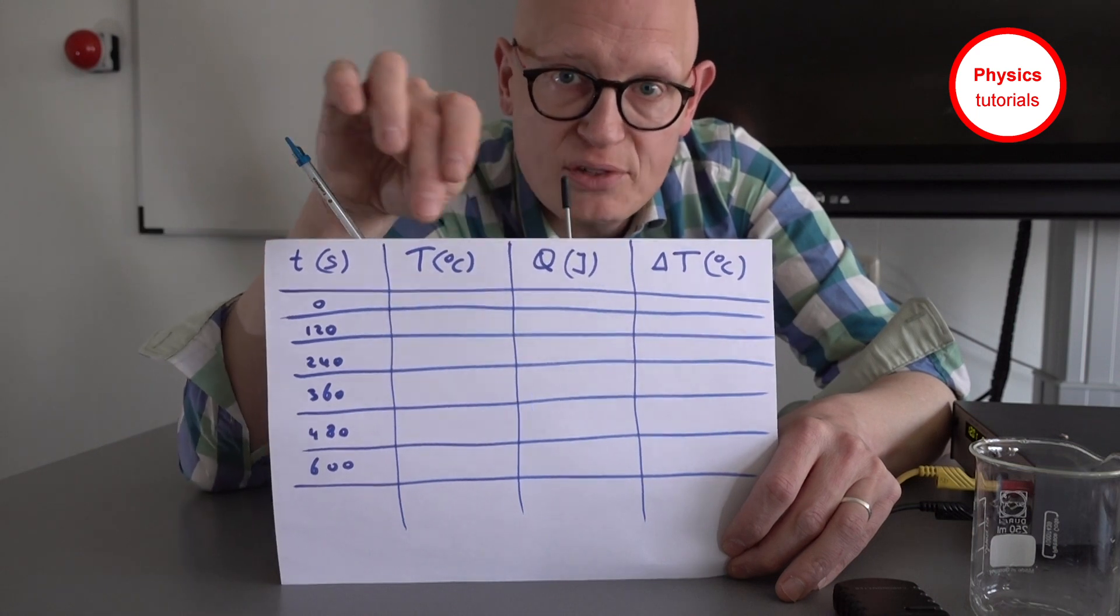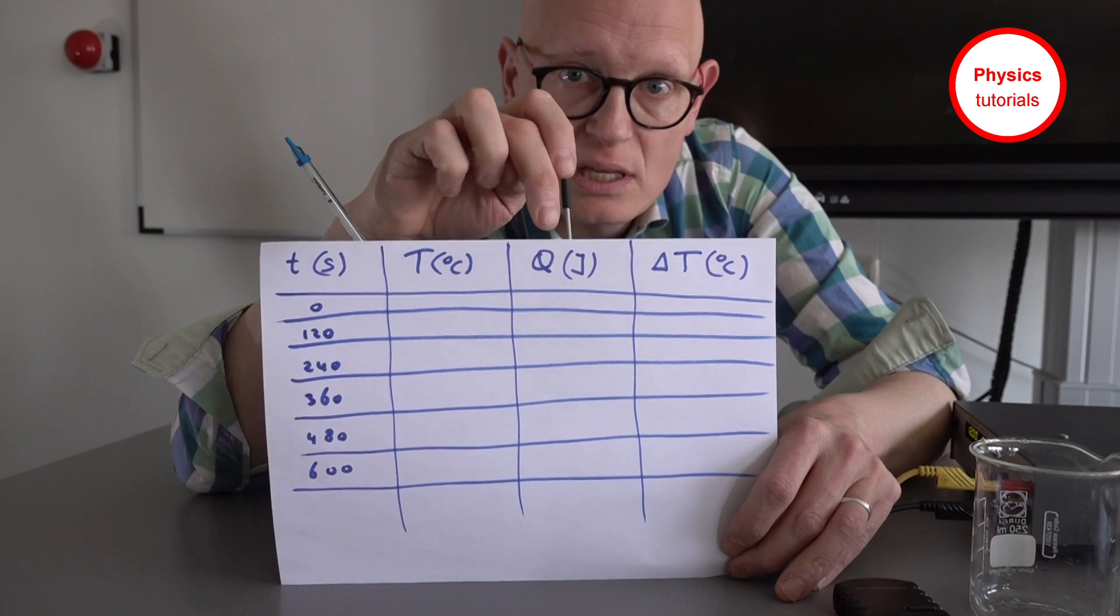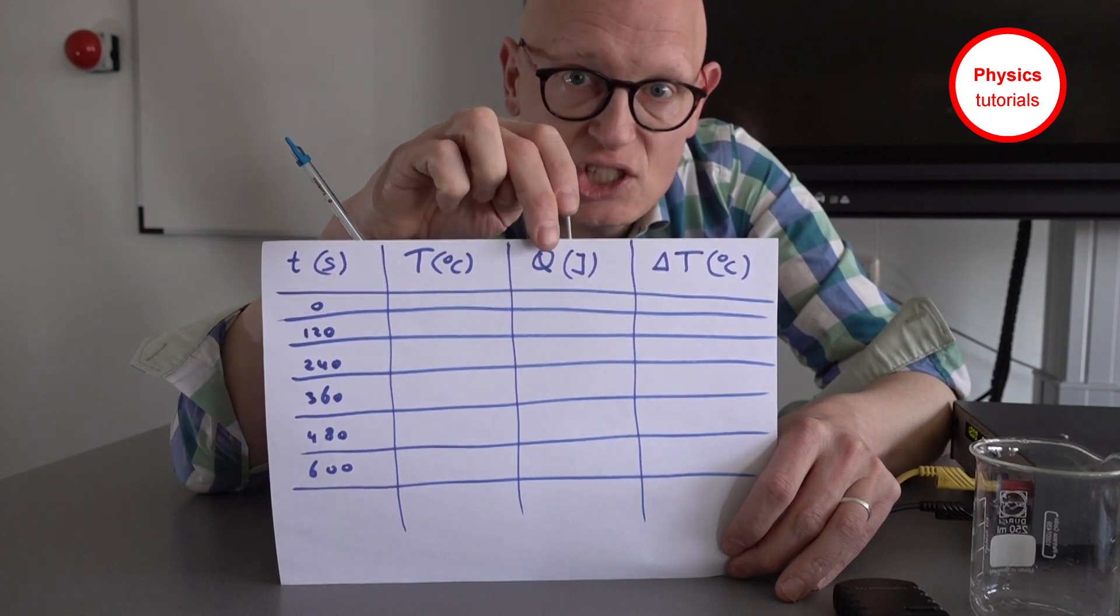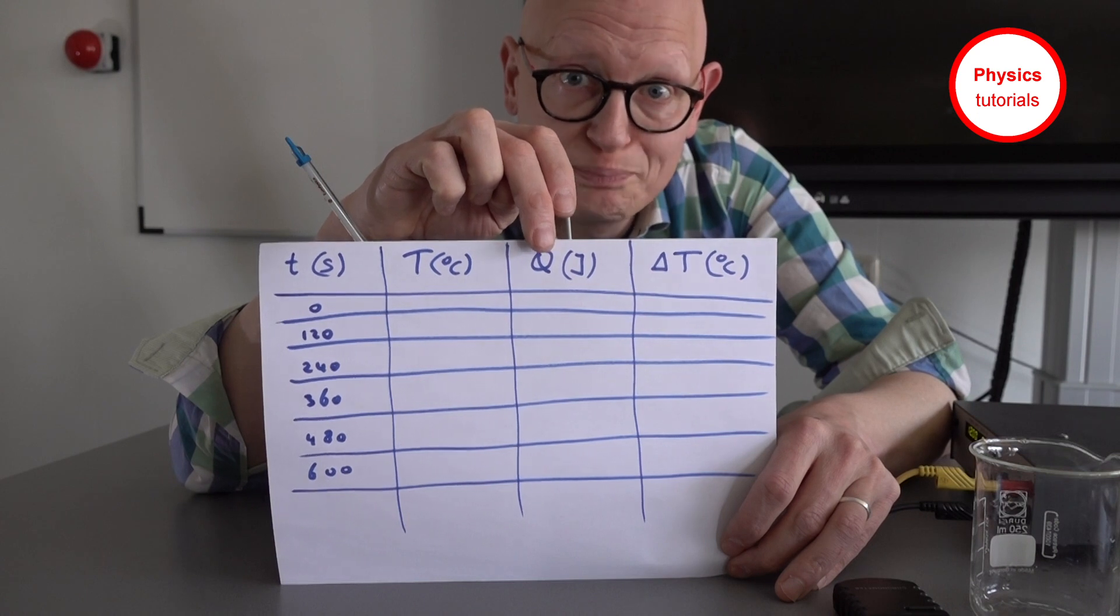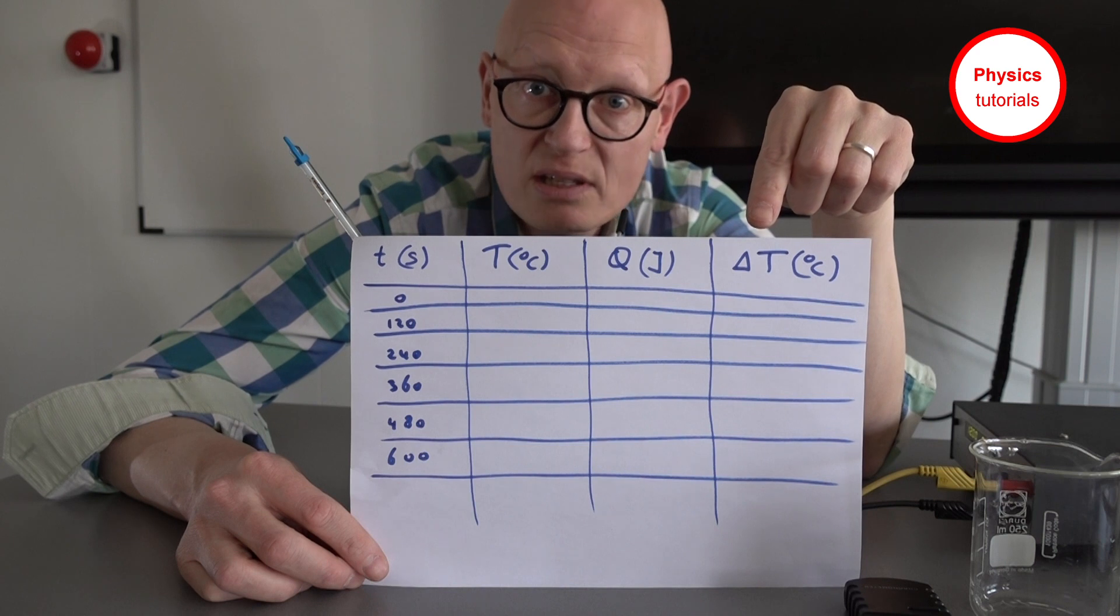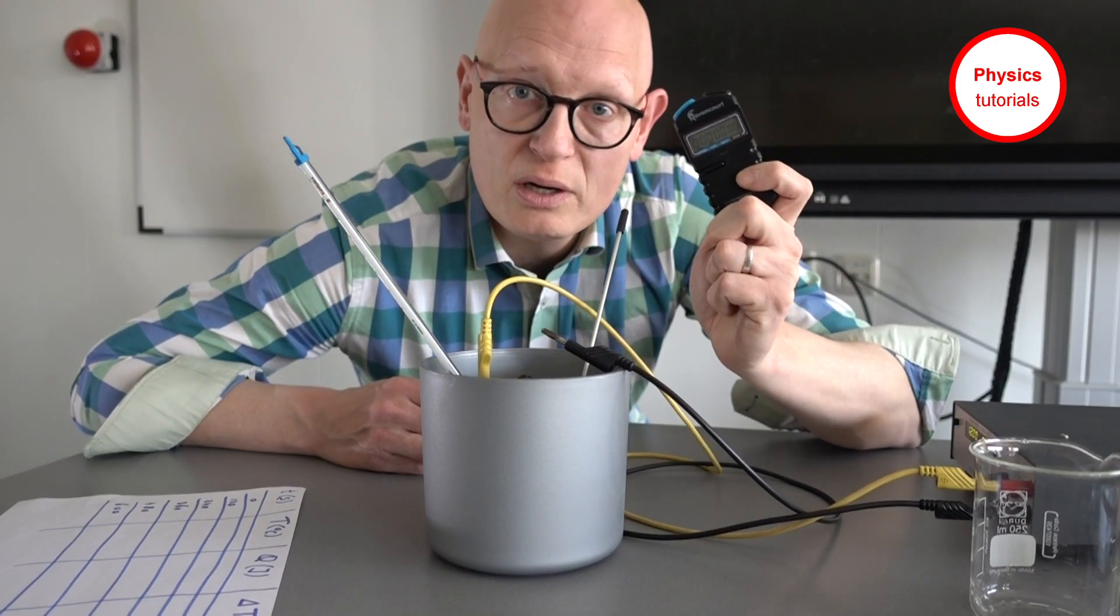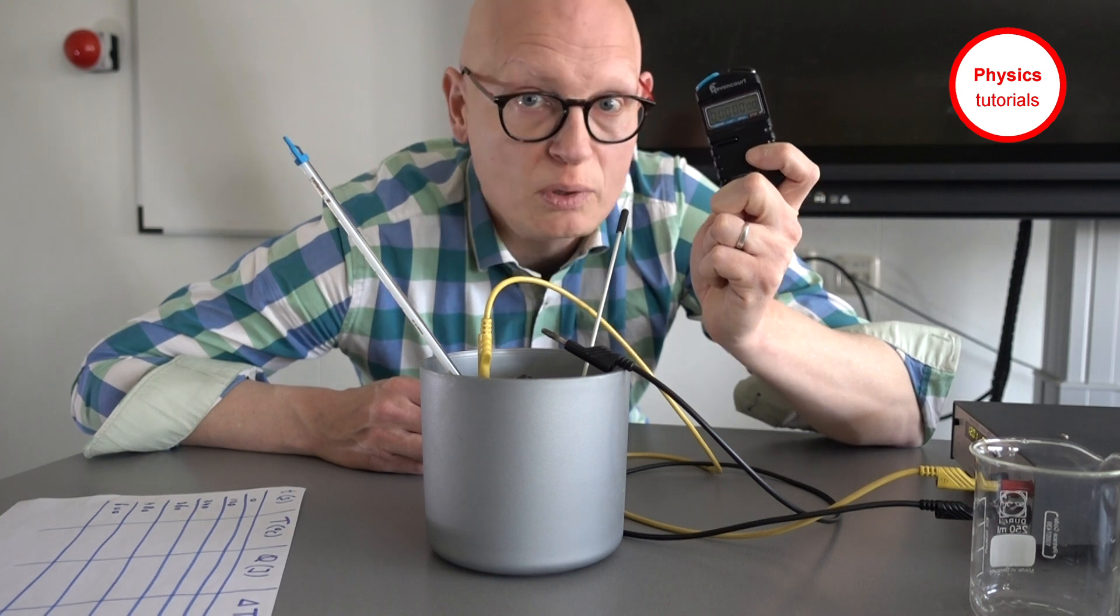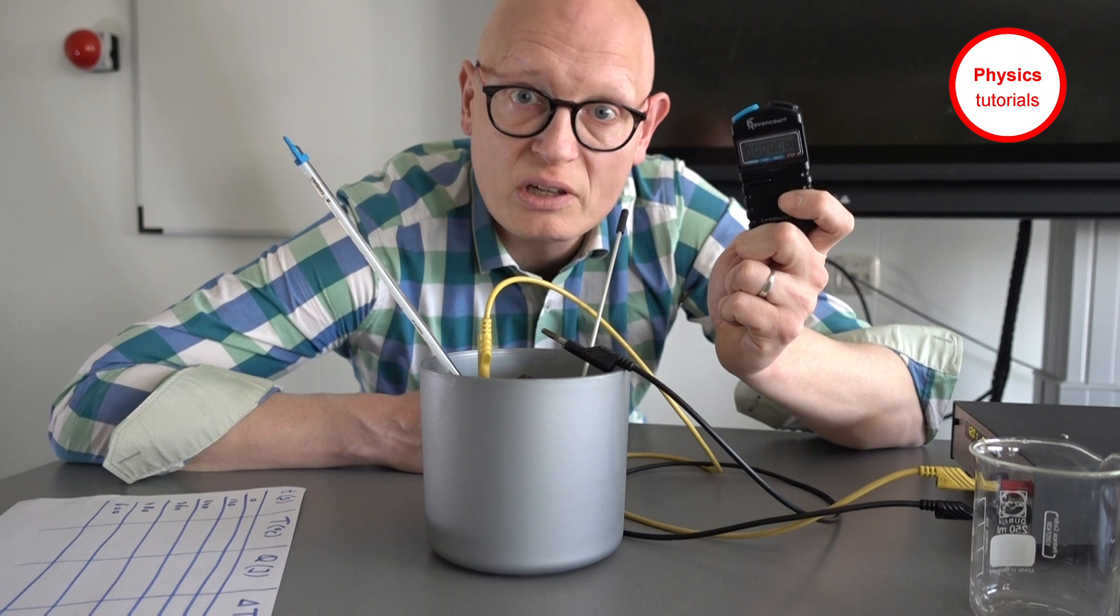After we've done the measurements we are going to calculate the amount of heat energy which is transferred to the water and the delta T, which is the temperature rise in degrees Celsius. We're also going to use a stopwatch, but we're not going to start the time before we've written down the starting temperature.